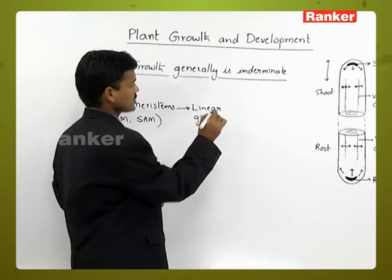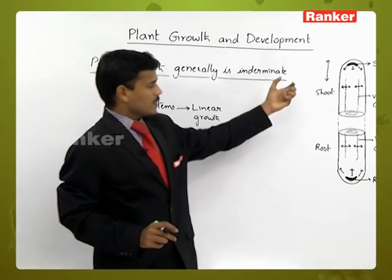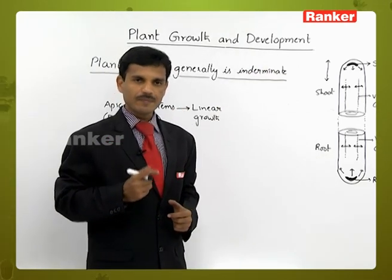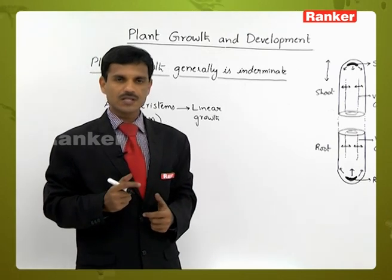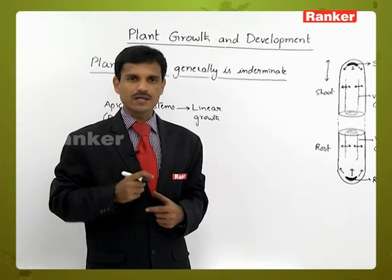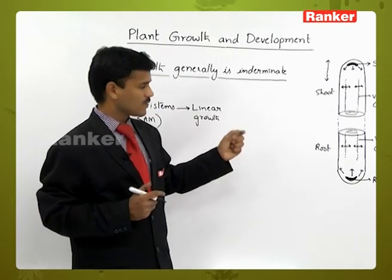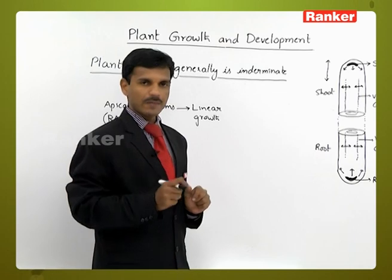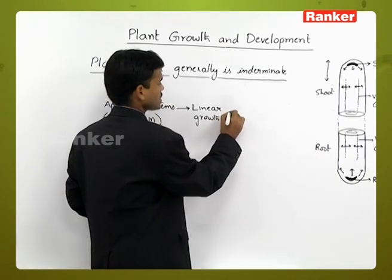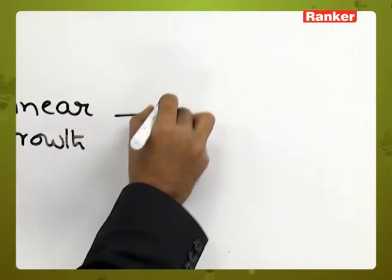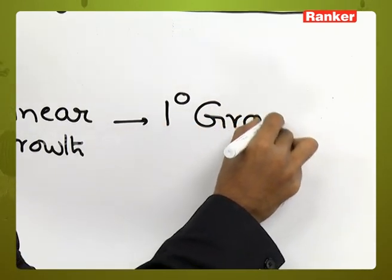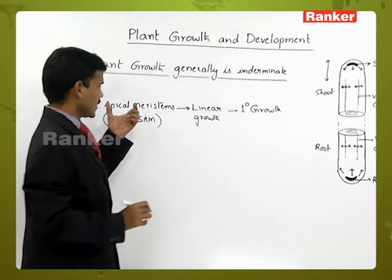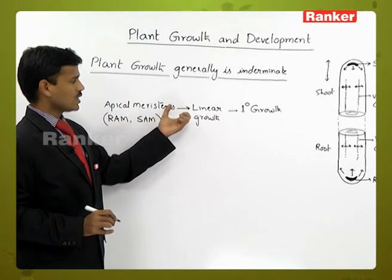The apical meristems are primarily the primary meristems — present from the beginning, from the starting stage of the plant life cycle. They are involved in primary growth. Linear growth is nothing but primary growth. Primary growth is due to the apical meristems, leading to linear growth.